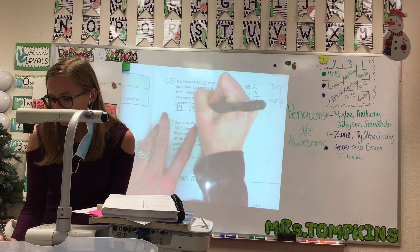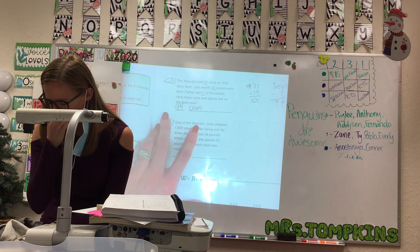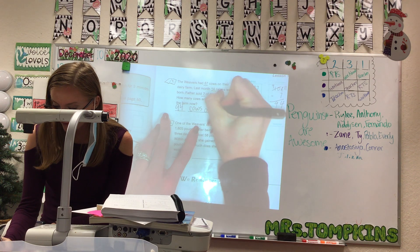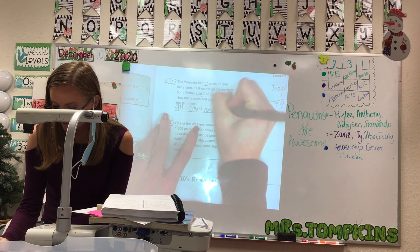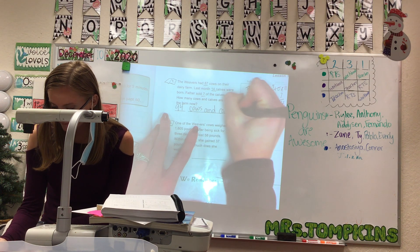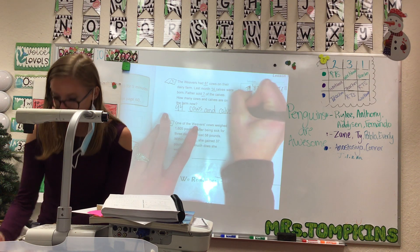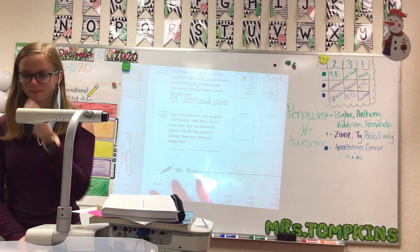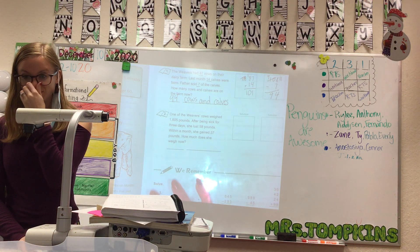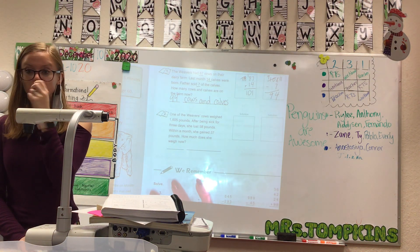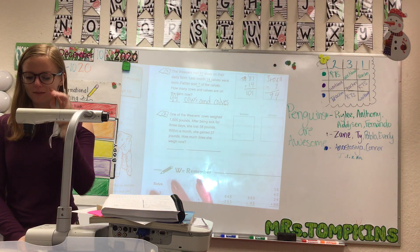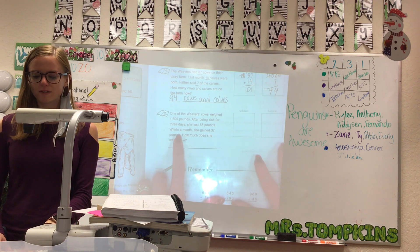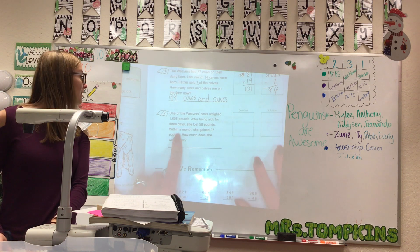We'll say cows and calves because that's what it says there — cows and calves. Good job, you guys. I think we did this in first grade. Did you? You did the two-step problem? Okay. This one's going to be a little bit more difficult with the numbers.